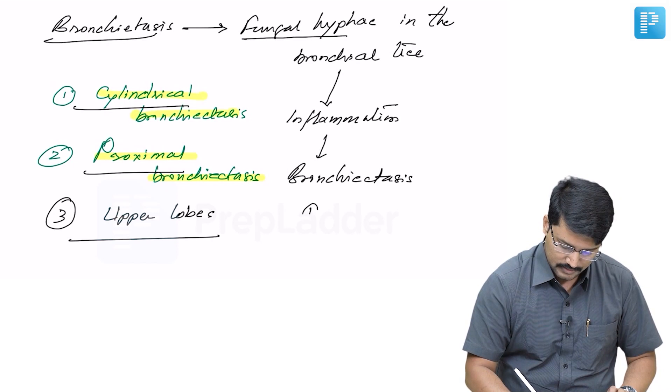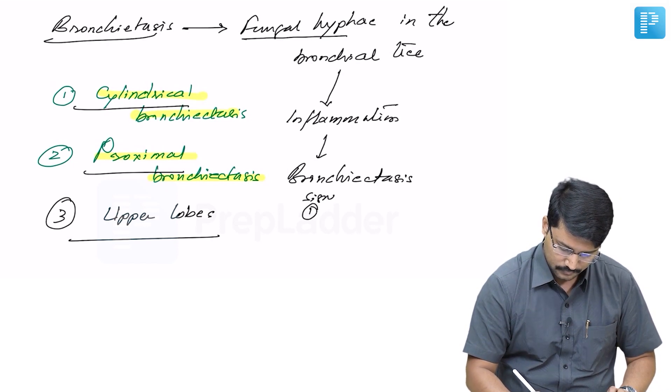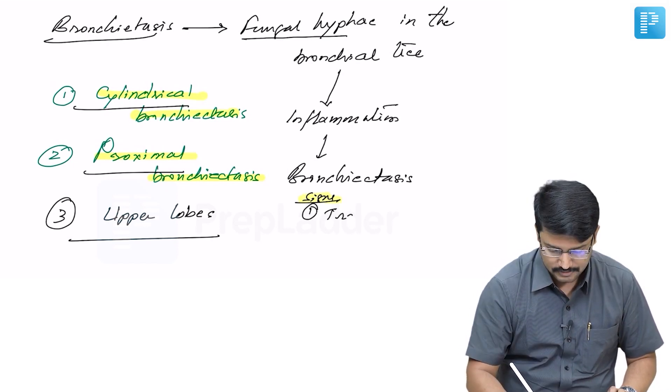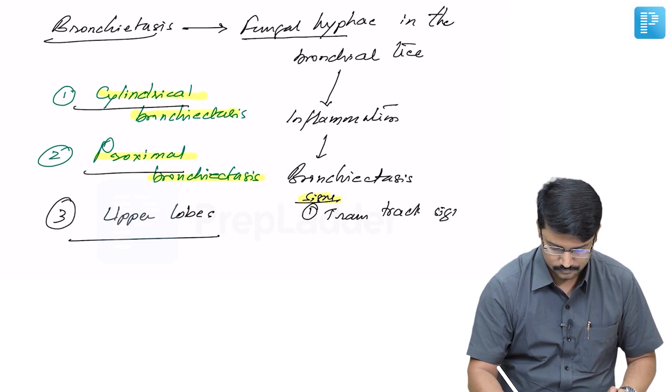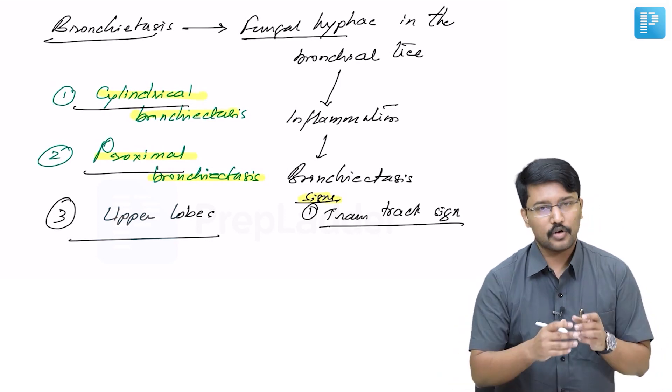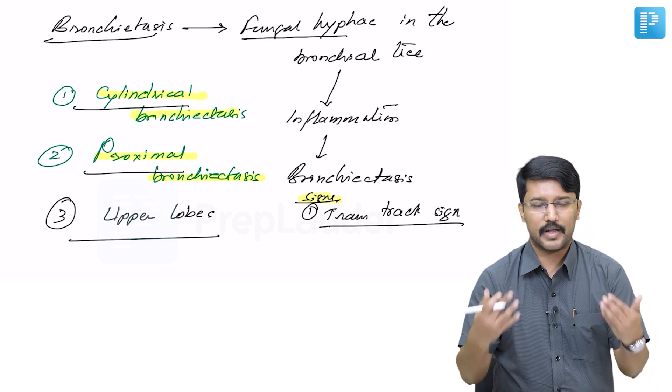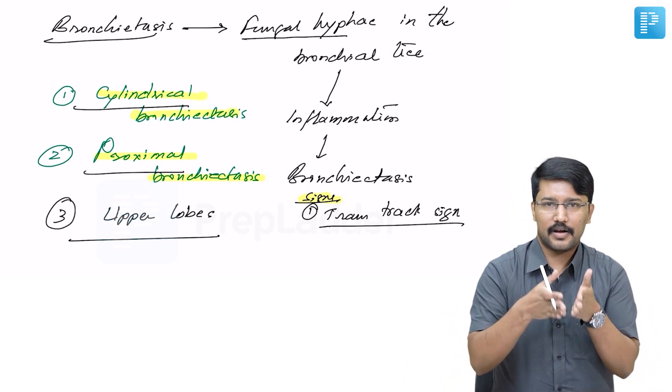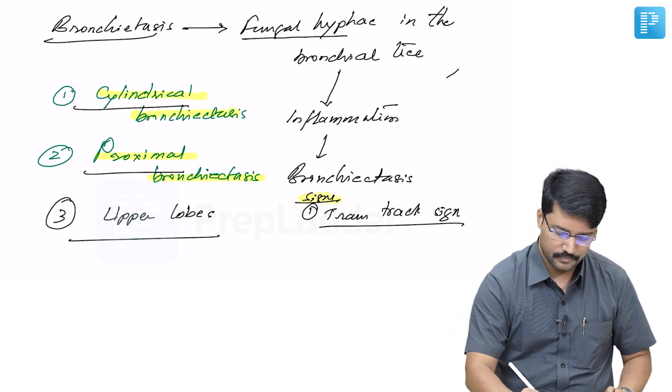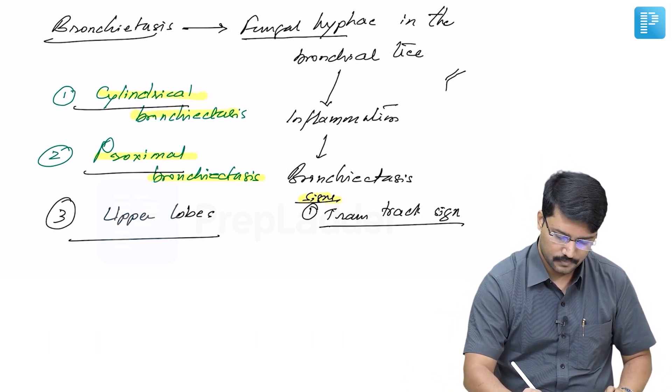One of these is the tram track sign. The normal bronchial tree, as it branches and progresses through its generations, narrows down.